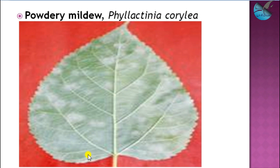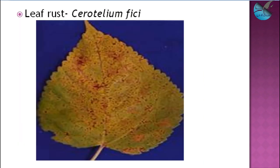The next fungal disease is powdery mildew, caused by Phyllactinia corylea. You can see the powdery symptoms on the lower leaf surface. In areas where powdery mildew is a major problem, we should provide proper vital spacing and use resistant varieties like MR1. When disease population is high, go with chemicals like carbendazim. Releasing yellow ladybird beetles has also been tried, as they feed on powdery mildew.